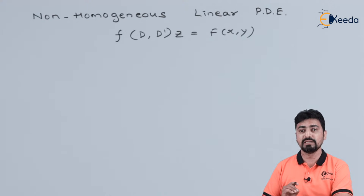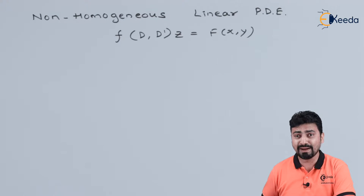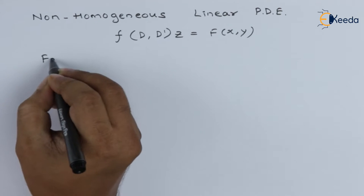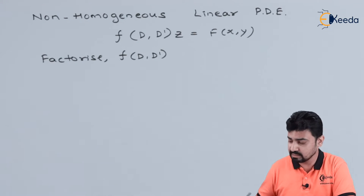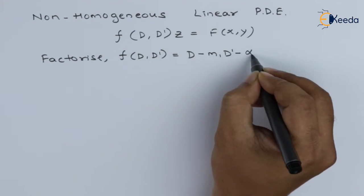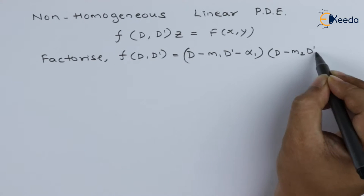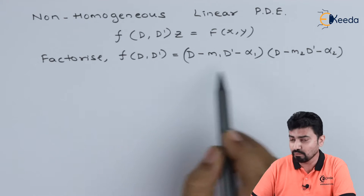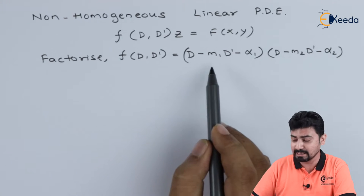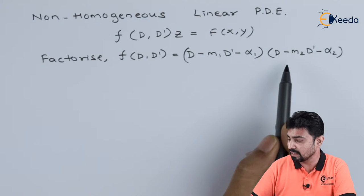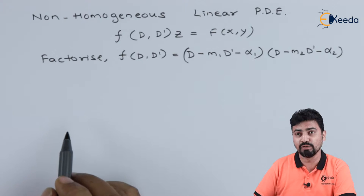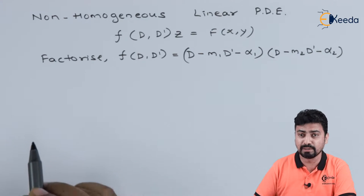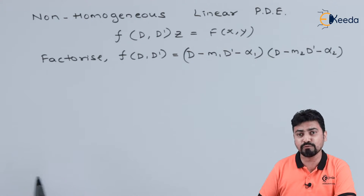To solve these types of linear partial differential equations, we first factorize the function of D and D'. We factorize into factors of the form (D − m₁D' − α₁)(D − m₂D' − α₂) and so on. After factorizing, we get the complementary function and also find the particular integral. So here also, the solution comprises two parts: the complementary function CF and the particular integral PI.